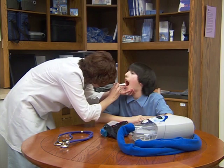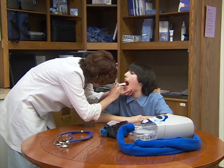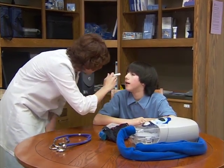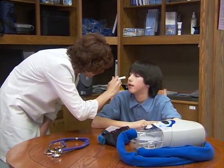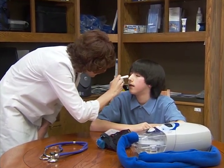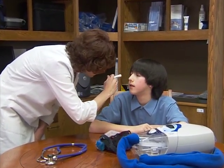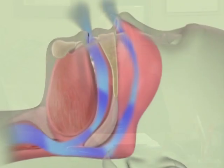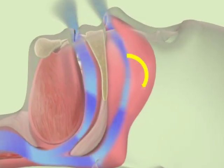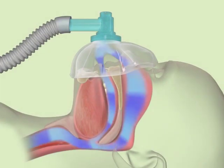Other treatments for obstructive sleep apnea depend on the cause of the problem. Children with differing defects in the face or head may require surgical repairs. In children who are obese or overweight, weight loss is an ideal treatment, but this can be a difficult process. For children with nasal blockages, allergy testing and treatment may be helpful. CPAP may also be helpful in many of these situations.